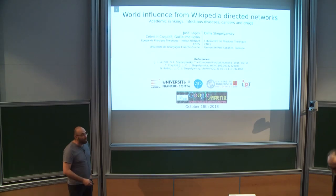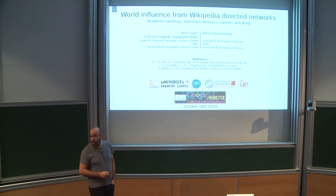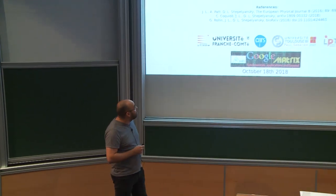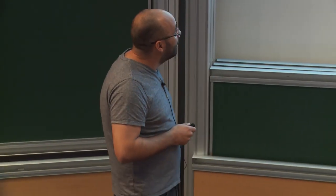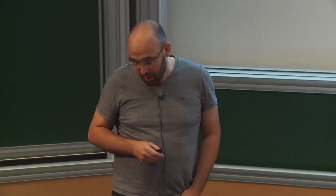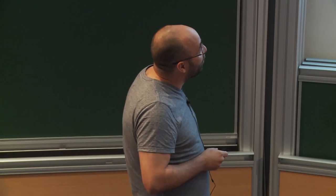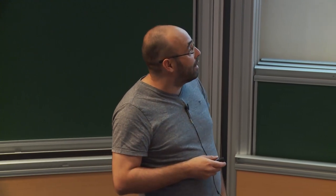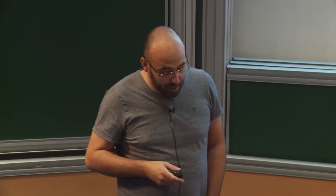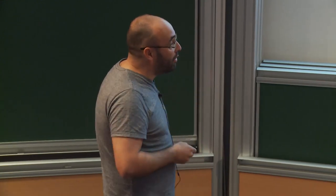First, I would like to thank the organisers for the invitation. My name is José Lagès. I work with Celestin Coquidet and Guillaume Rollin at the Institute of Intiname at the University of Bourgogne-Franche-Comté, and we collaborate with Dimash Epilansky. Today I will talk about how to extract global influence for entities of interest from Wikipedia, from directed networks constructed from Wikipedia. This talk will share some similarities with the talk of Katia, and the tools have already been exposed in the talks of Klaus and Katia this morning, so I will be brief on the mathematical tools.